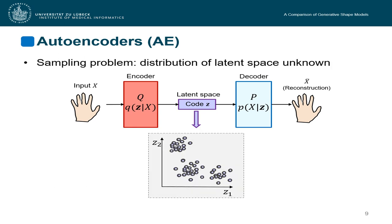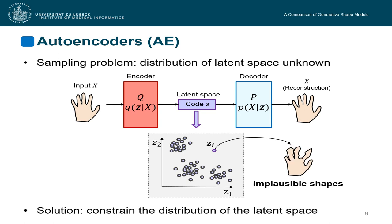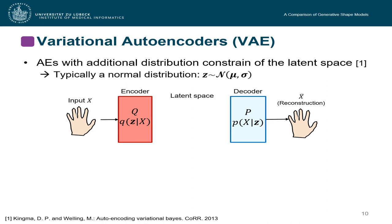However, there is a problem when sampling z like this because the distribution of the latent space is unknown. So let's imagine we have this distribution, a few clusters, which is actually pretty probable. And we sample z that lies somewhere outside of those clusters. Now the generated image will be highly implausible. And to overcome this issue, an idea is to constrain the distribution of the latent space.